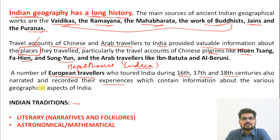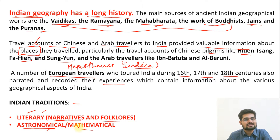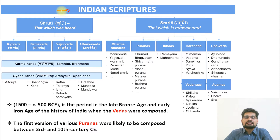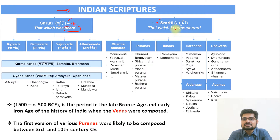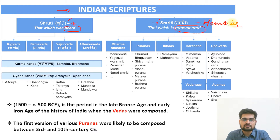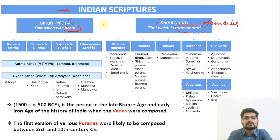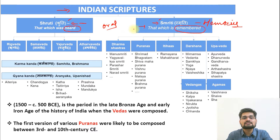To understand the evolution of geographical thought in India we need to look into these particular traditions. Just as during the Greeks and Romans there were literary, astronomical, and mathematical traditions, similarly in India we have literary traditions composed of narratives and folklore, as well as astronomical and mathematical traditions. Indian scriptures can be divided into two segments: one is called Shruti and the other is called Smriti.